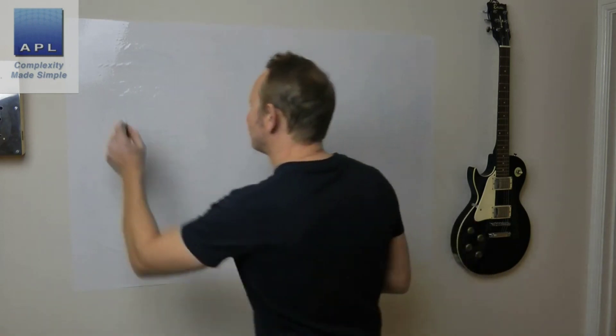Welcome to Complexity Made Simple, my name is Paul Allen. Today's video is an answer to a question someone asked me on YouTube. We're going to look at the cost of quality, the cost of poor quality, and the lean wastes — three distinct but related subjects.